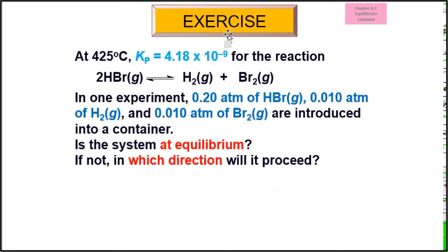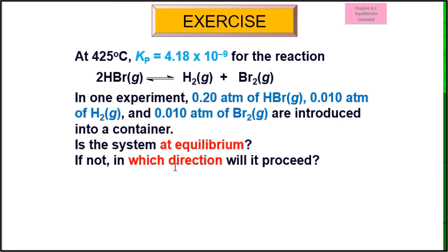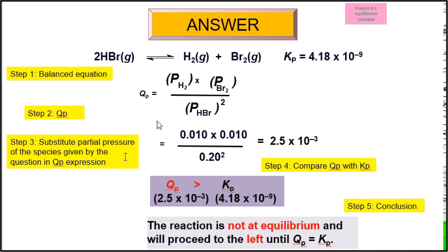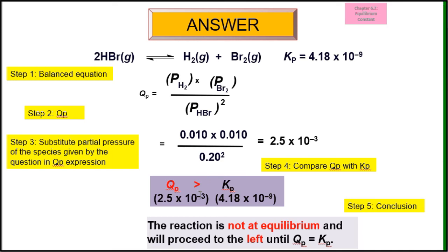Exercise 4 is the same type. Kp is given, and the partial pressure of each species is given. The question asks whether the system is at equilibrium and, if not, which direction it shifts. Step 1: write the equation. Step 2: write the Qp expression. Step 3: substitute the partial pressure of each species. Step 4: compare Qp with Kp. In this case, Qp is larger than Kp, meaning more product is formed, so the reaction is not at equilibrium and must shift to the left to decrease product concentration and increase reactant concentration.